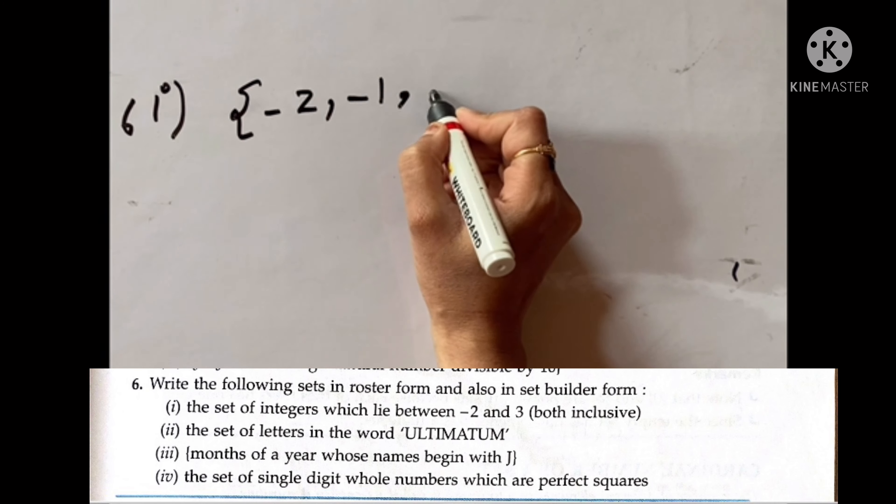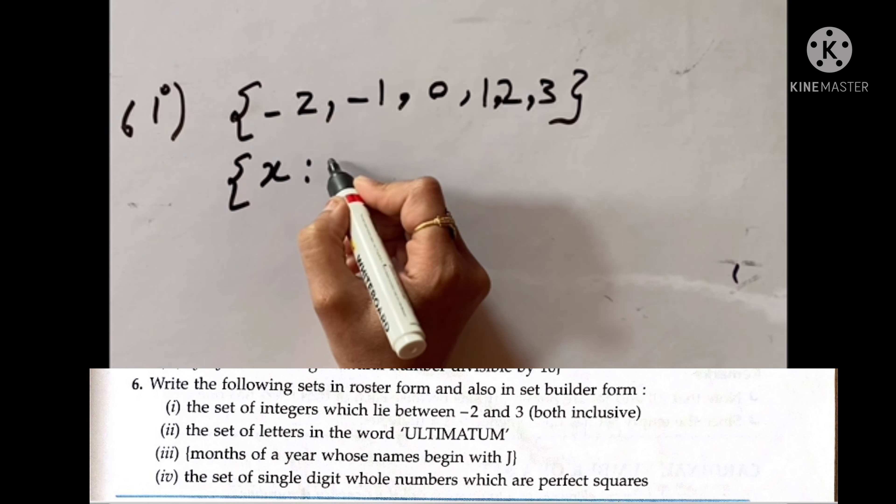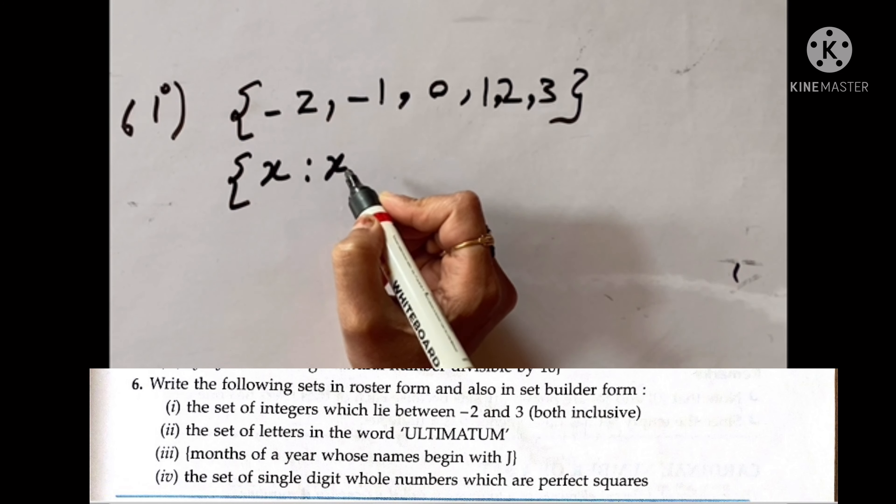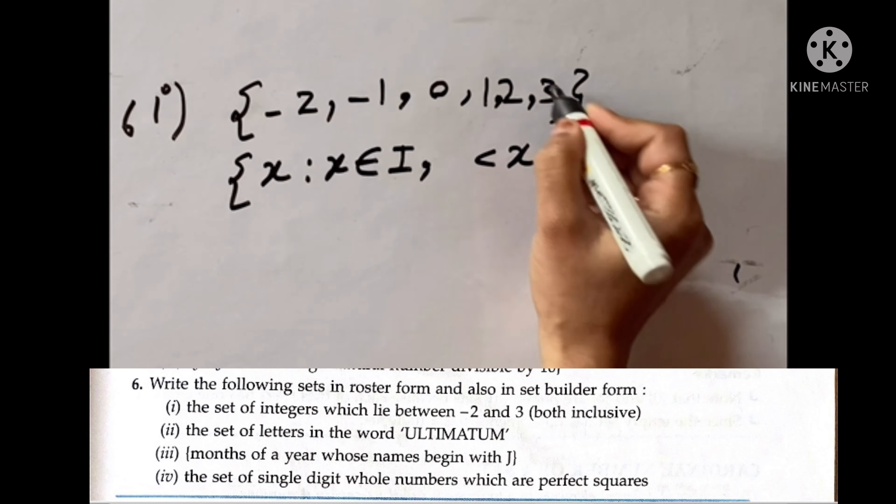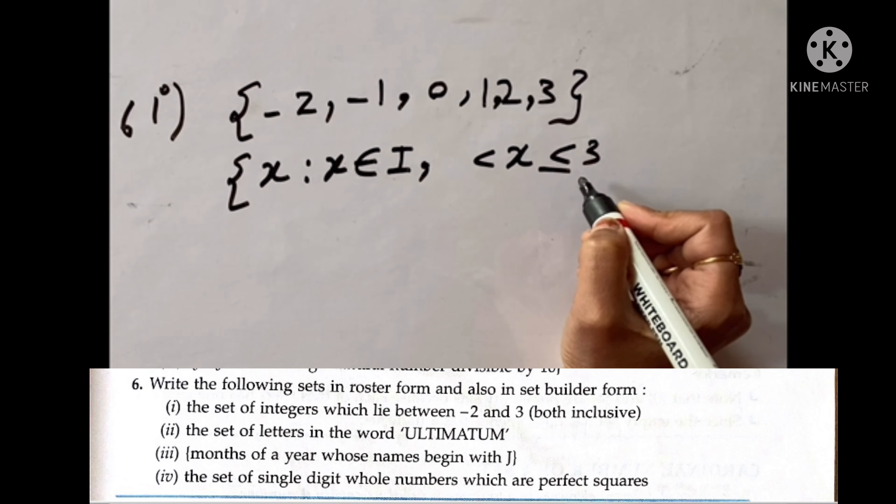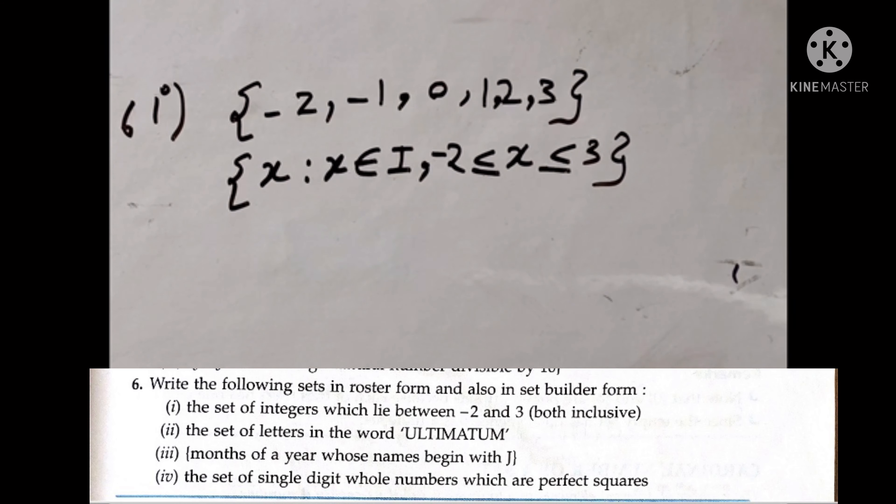And second one is your set builder form. What we have to write in that? First one is the variable, then two dots, then x is the property. So x what is here? x is an integer. x belongs to integer. And what is this? That is why we are taking equal to sign. So this is your tabular form, this is your set builder form.